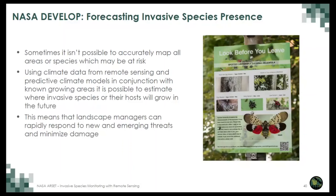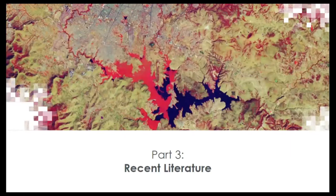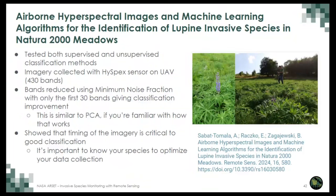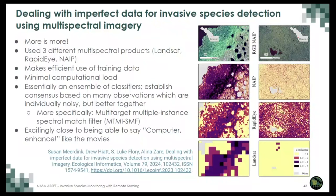This can mean many things — from denying invasives the conditions they need to become established, to increased monitoring of vulnerable areas, or public information campaigns to reduce the chance that an invasive species breaks containment. Now I want to go over some recent literature which makes use of remote sensing and pick out a few generalizable lessons learned. This paper describes the identification of invasive lupines, a group of plants in the pea family, using both supervised and unsupervised classification methods and data collected from a hyperspectral sensor aboard a UAV. They discovered that the timing of imagery collection was an important factor — knowing the phenology of the invasives and background species allowed them to pick imagery collection windows that maximized the model's ability to differentiate between invasive and non-invasive plants.